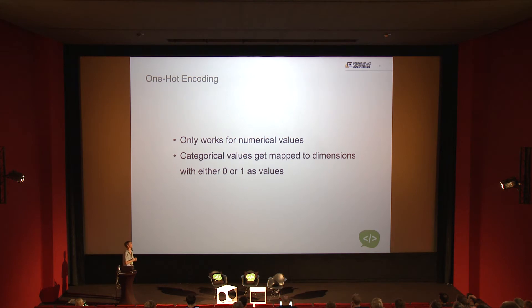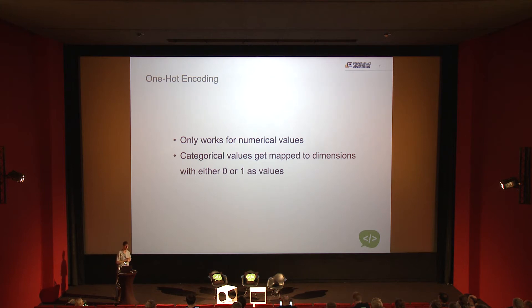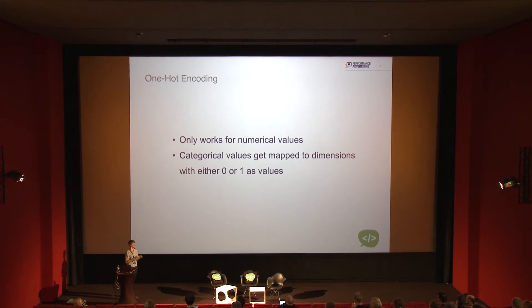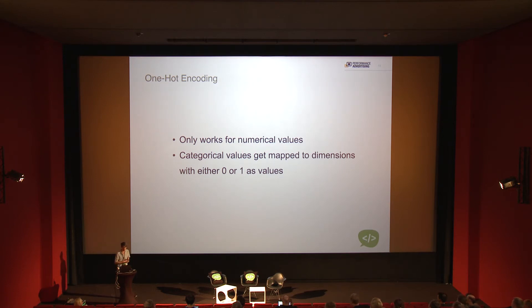Cosine similarity only works well for numerical values. You cannot use it for database IDs — if ID 17 is trousers and ID 18 is shoes, 18 is numerically greater than 17, but there's no real correlation between them. So you can't use raw IDs directly.